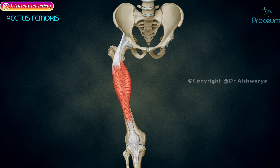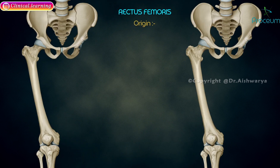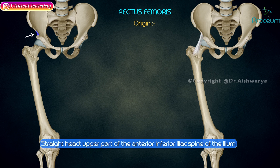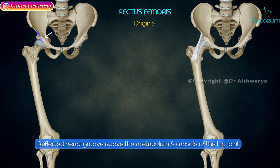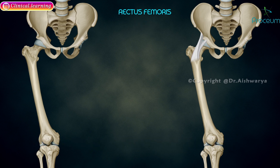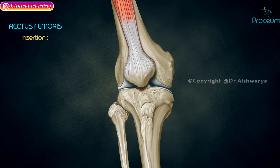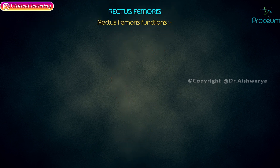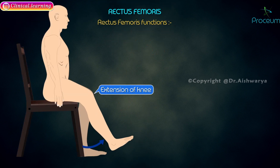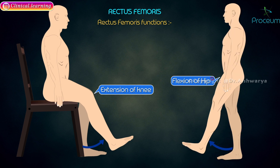Rectus femoris. It originates by two heads. The straight head originates at the upper part of the anterior inferior iliac spine of the ilium, and the reflected head at the groove above the acetabulum and capsule of the hip joint. Both heads meet and form an aponeurosis which extends down to form a flat tendon inserted into the base of the patella. A few fibers extend further down in front of the patella to form the patellar ligament. An important point to note is that the rectus femoris crosses both the hip and knee joints, so in addition to extending the knee it also flexes the hip.